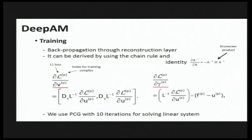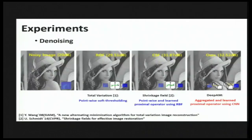To train the parameters in the network, we need the gradient of the loss with respect to the auxiliary variable V and the balancing parameter gamma. Fortunately, the reconstruction layer is still differentiable, and we can derive the following formula using the CNN.